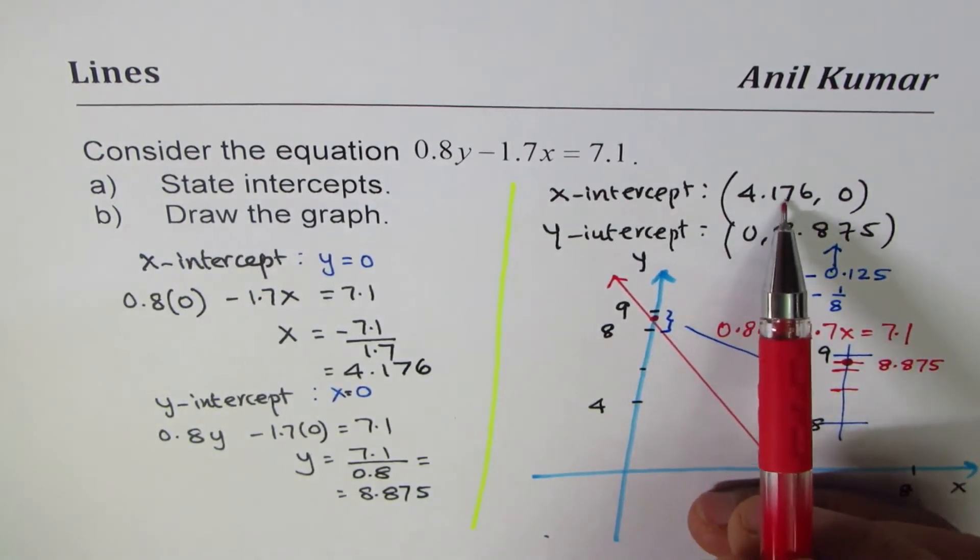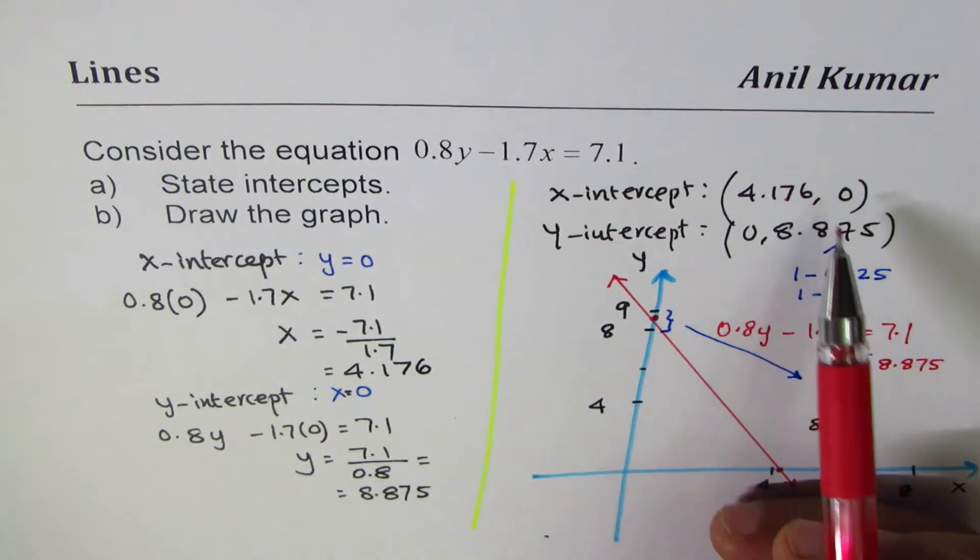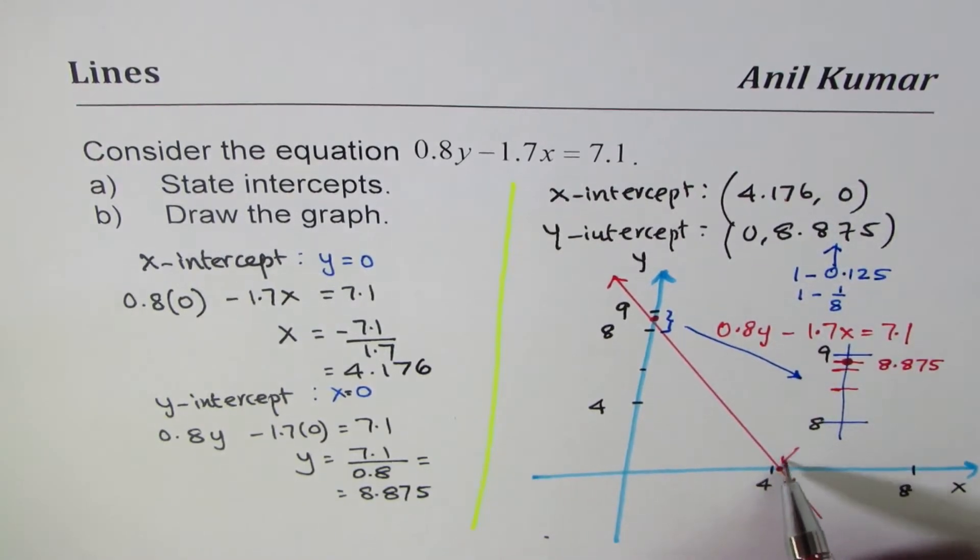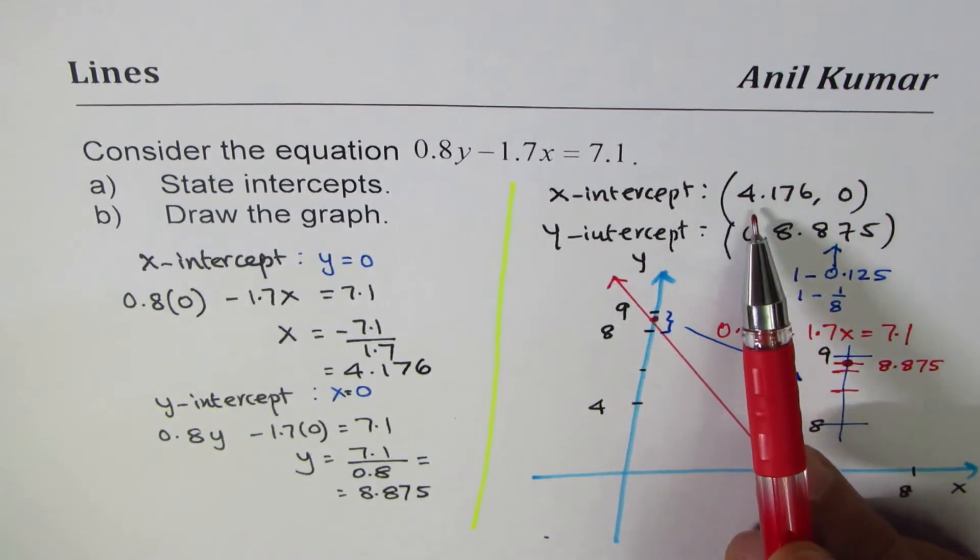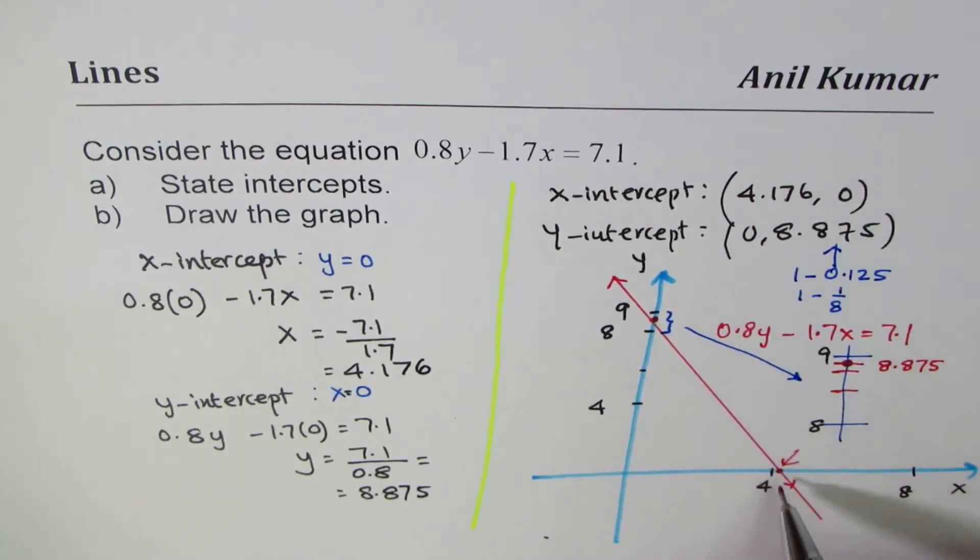Now similarly, this could be treated as 1.75, and you can get this point very accurate. So you have to figure out what closest fraction will be there, and then you can get this point.